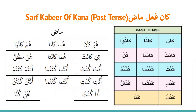Here is the sarf kabir of fheli madhi of kana. Huwa kana, huma kana, hum kanu, hiya kanat, huma kanata, hunna kunna, anta kunta, antuma kuntuma, antum kuntum, anti kunti, antuma kuntuma, antunna kuntunna, ana kuntu, nahnu kunna. This is the sarf kabir for past tense of kana. I recommend pausing the video and saying this chart two times to become familiar with these conjugations.